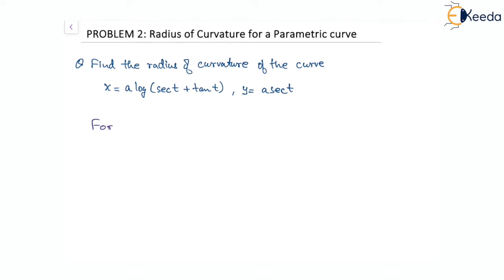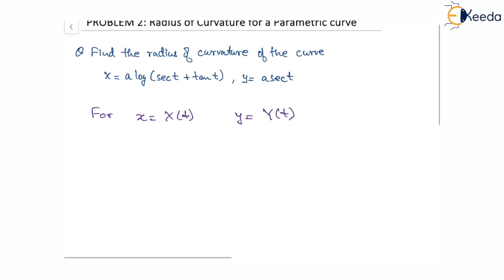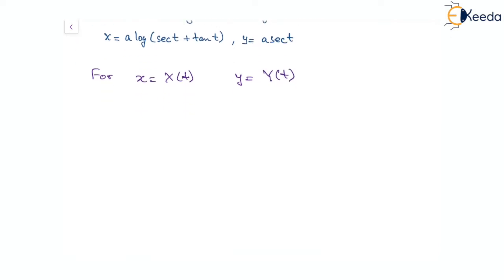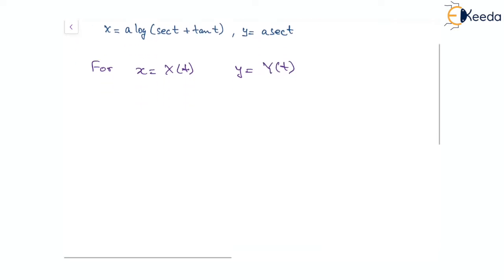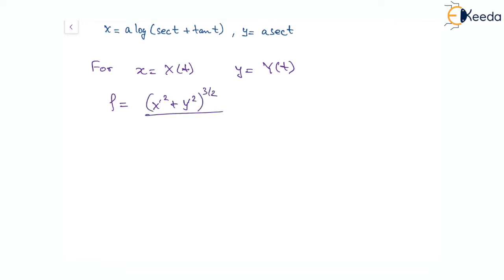Since these are in parametric form, the radius of curvature can be found by the formula: x dash squared plus y dash squared to the power of 3 by 2, divided by x dash times y double dash minus x double dash times y dash.